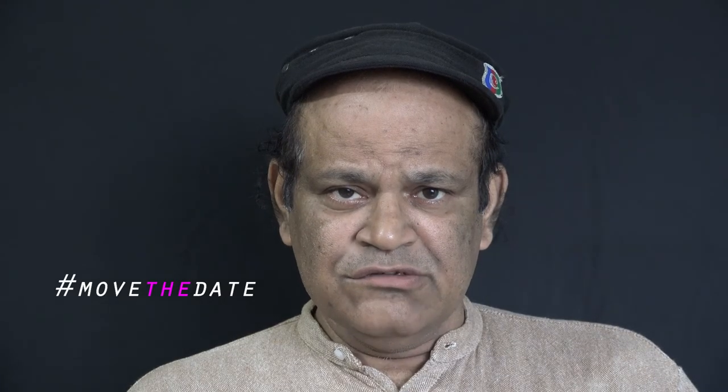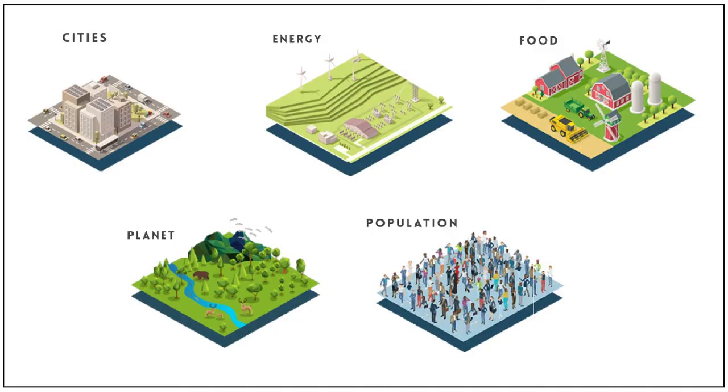The hashtag for the 2019 Earth Overshoot Day is 'Move the Date.' Thriving lives within the means of our planet are not out of reach. There are solutions in five major areas for improving sustainability: Cities, Energy, Food, Planet, and Population.